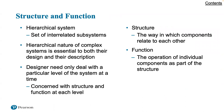In terms of structure and function, there's a hierarchical system — a set of interrelated subsystems. The hierarchical nature of a complex system is essential to both its design and description. The designer needs only to deal with a particular level of the system at a time, concerned with structure and function at each level. Structure refers to the way components relate to each other, and function relates individual components as part of the structure. A computer is a complex system; contemporary computers contain millions of elementary electronic components.